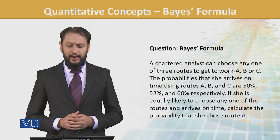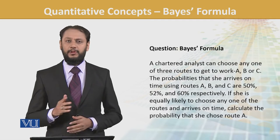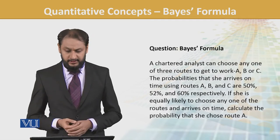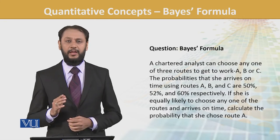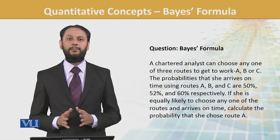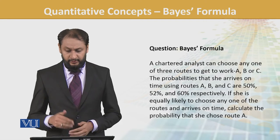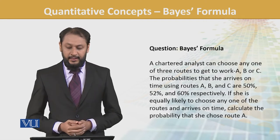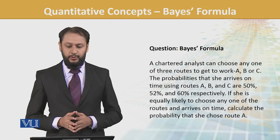A chartered analyst can choose any one of three routes to get to work: A, B, or C. The probabilities that she arrives on time using routes A, B, and C are 50%, 52%, and 62% respectively.